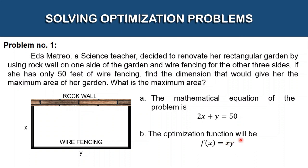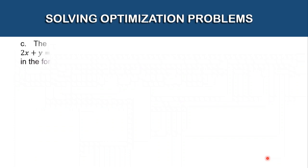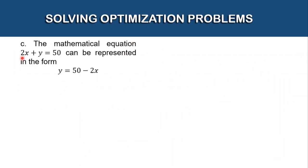The second one — we need to find the optimization function, and it is f(x) = x · y, because if we multiply x times y we are going to find the area of our garden.